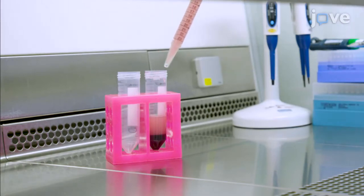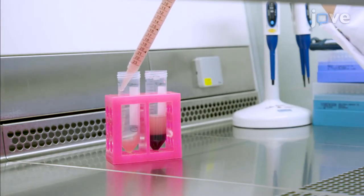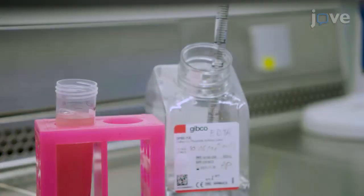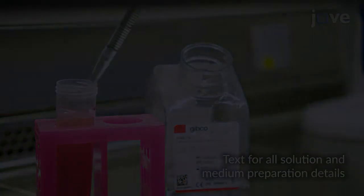When the red blood cells have settled, transfer the supernatant to a 50ml tube and fill the tube with 2 millimolar PBS.